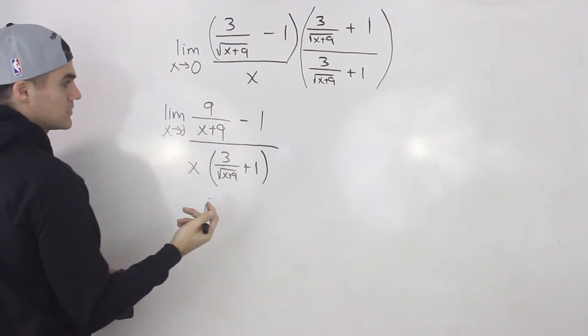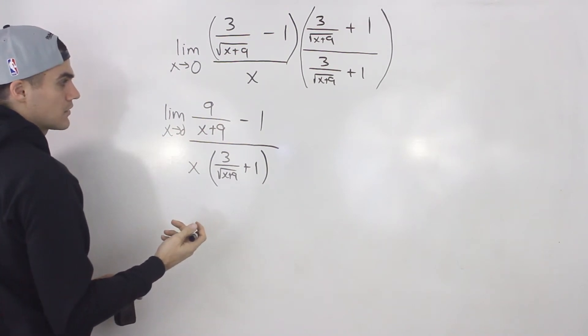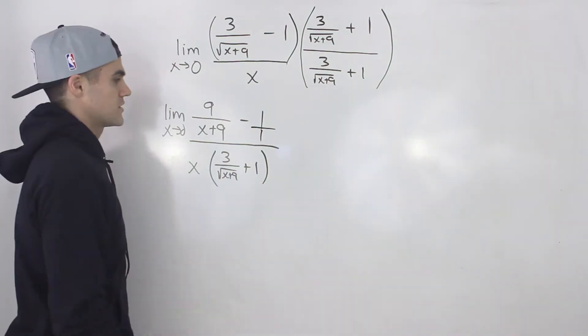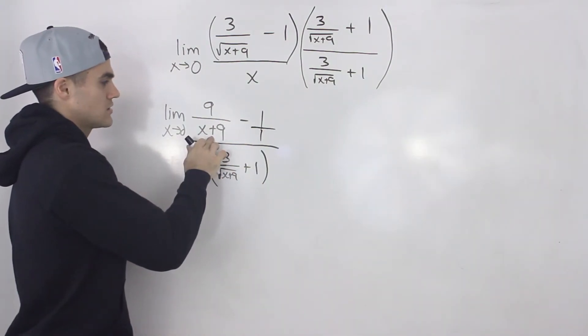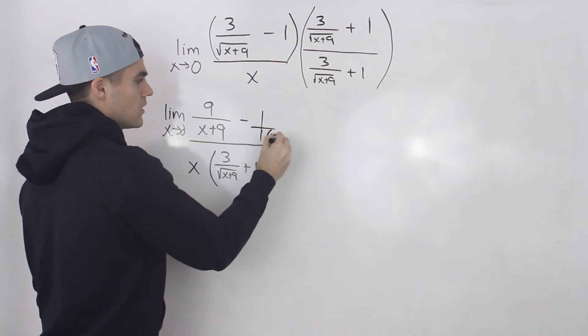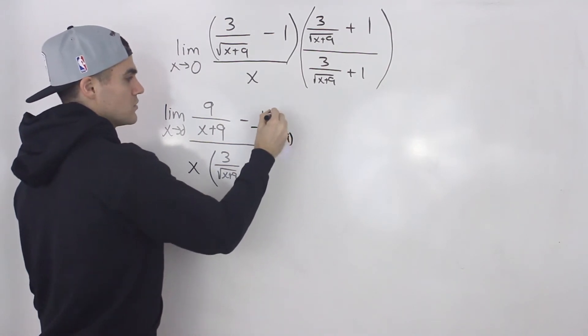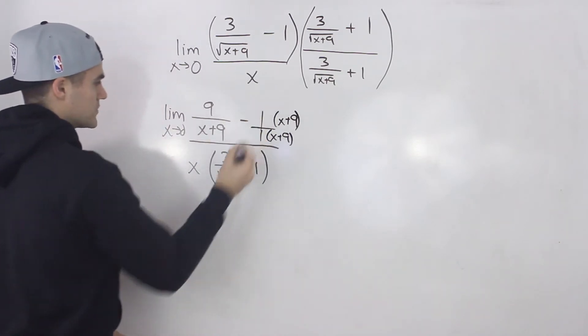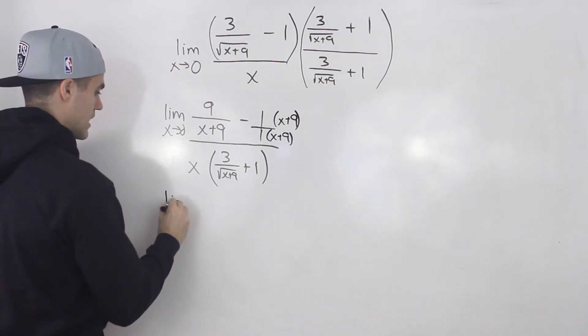We can combine these terms and the way we do that is we get a common denominator. So notice that this 1 here is like over 1. So to subtract with this fraction, the denominator is x plus 9. So we've got to multiply this 1 by x plus 9. What we do to the bottom, we do to the top as well.